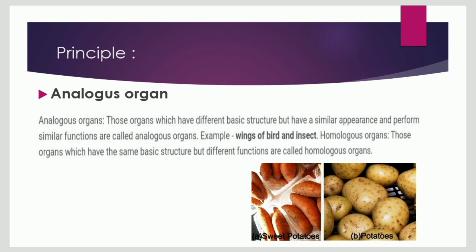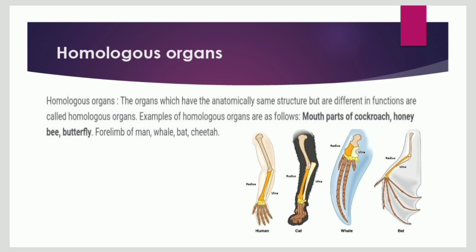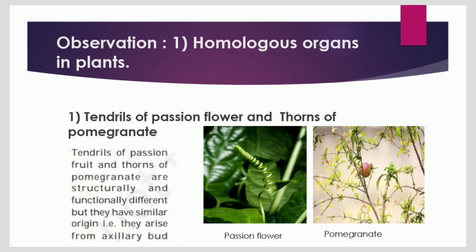Homologous organs are those organs which have the same basic structure but perform different functions. Their anatomy is the same but their functions are different. For example, the four limbs of man, whale, bat and cheetah are anatomically the same but they perform different functions in different organisms.